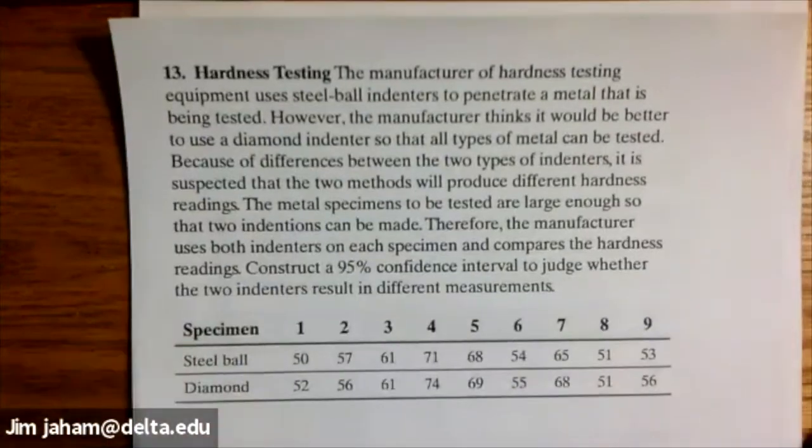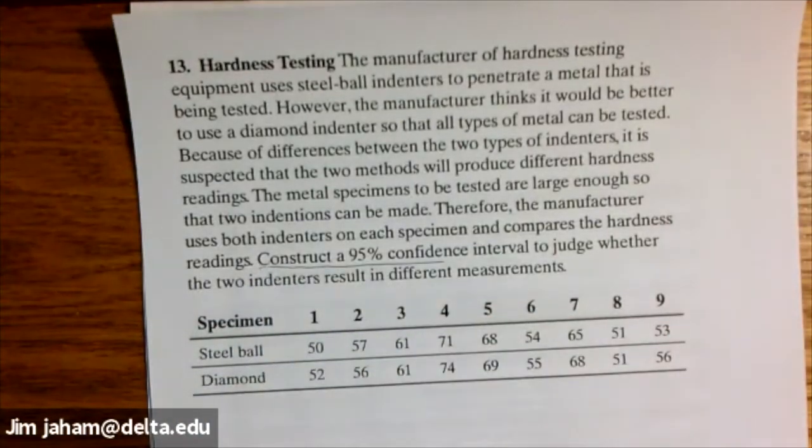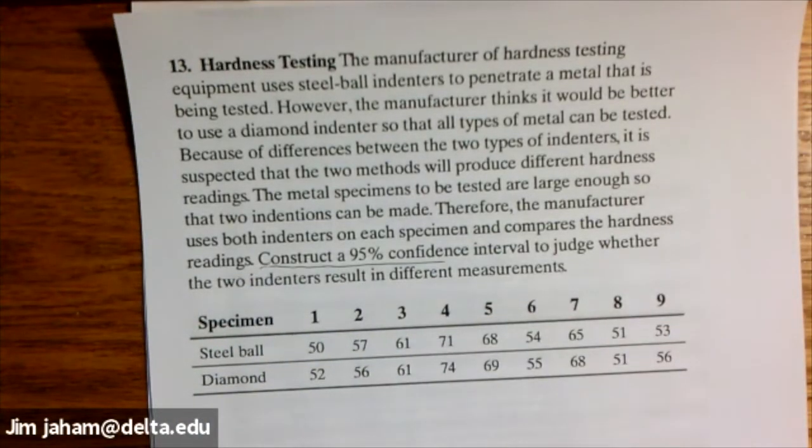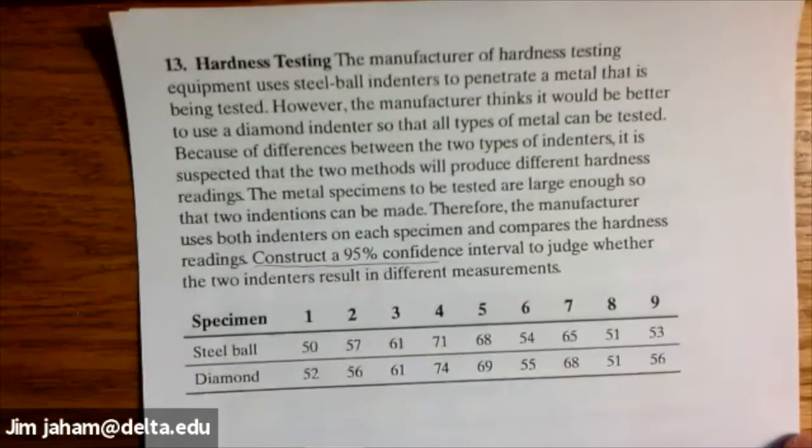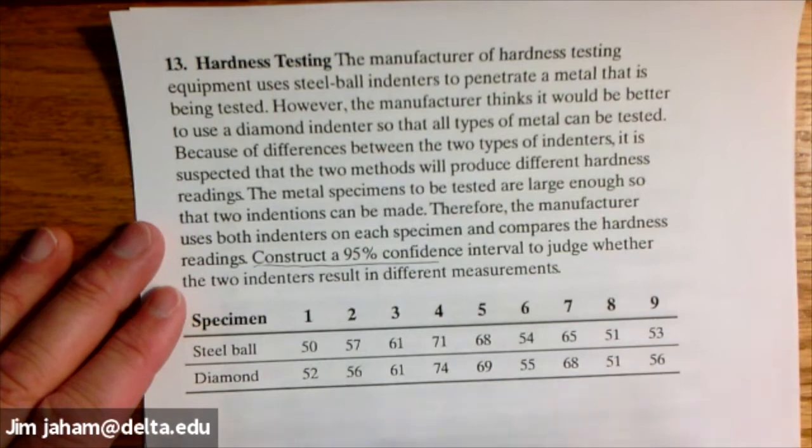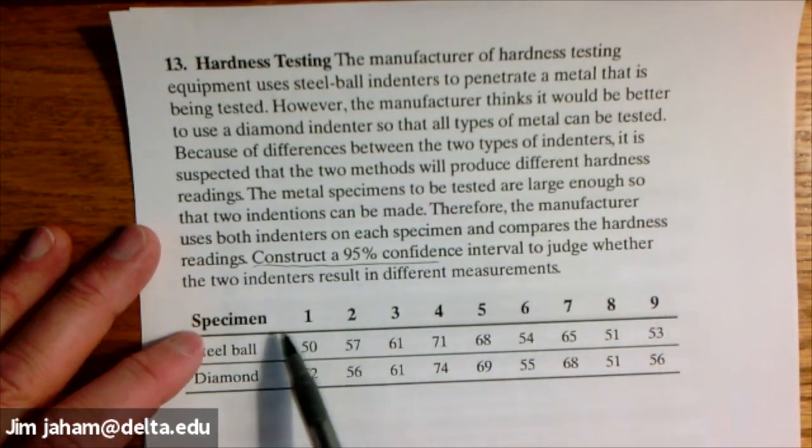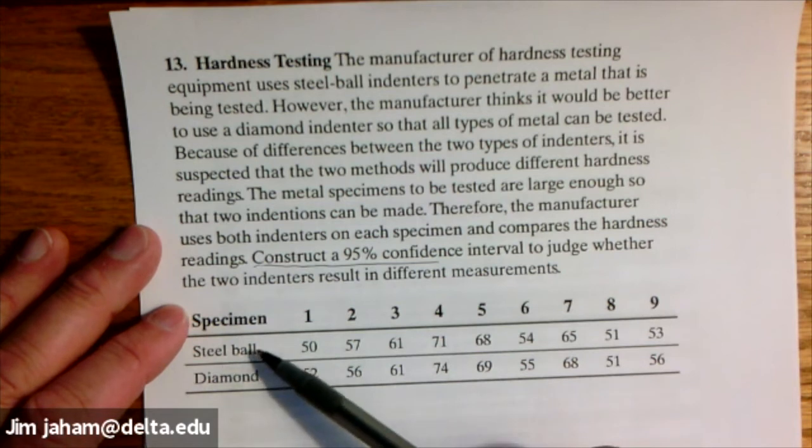Number 13 on that sheet. Notice it says to construct a 95% confidence interval. I play softball down in the rec league in Midland here, and every year we have to take our bats to be tested, and they use some kind of process like this. And here they have nine different specimens. If you want to think about this, it could be nine different bats.